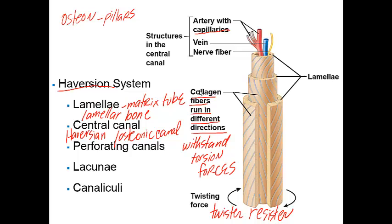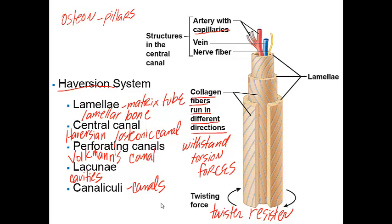There are also perpendicular tubes that run at right angles to the central canal. These perpendicular tubes are called perforating canals, also referred to as Volkmann's canals. There are also spider-like osteocytes that occupy little cavities referred to as lacunae (singular: lacuna), and canaliculi are the little hair-like canals that connect lacunae to each other and to the central canal.